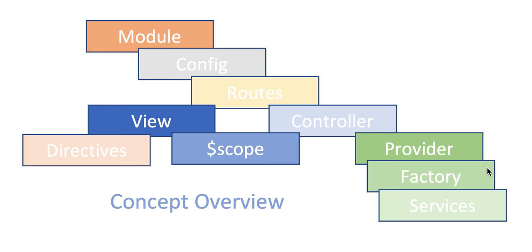Then we have the factory. The factory is another service type that is simpler than provider. Like provider, it returns an object service where private methods and variables can be encapsulated. We use factory to implement complex business logic without requiring configuration.